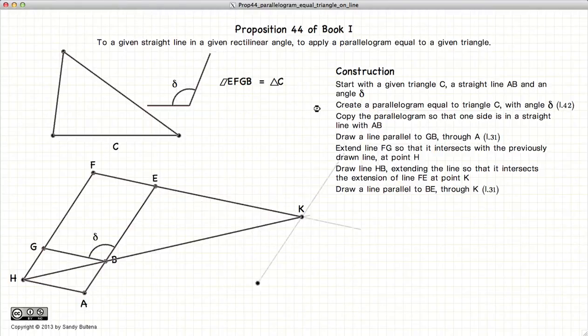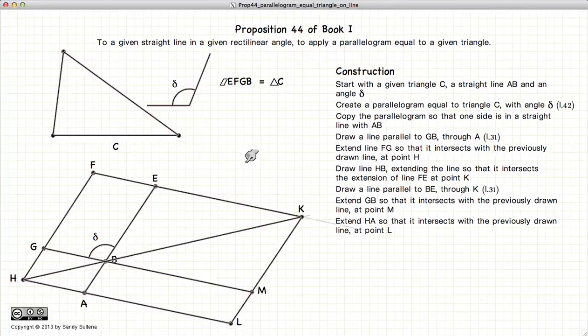and constructing a parallel line through K parallel to AE. So first we construct our parallel line and we now extend the rest of these lines. So this large parallelogram is a parallelogram. And HK is the diagonal of that parallelogram.